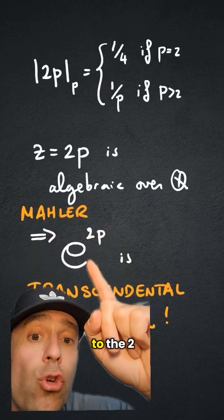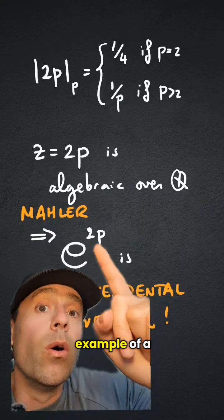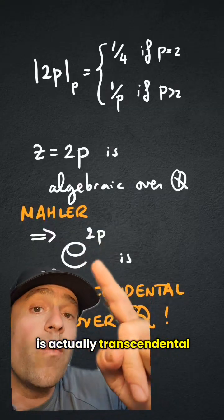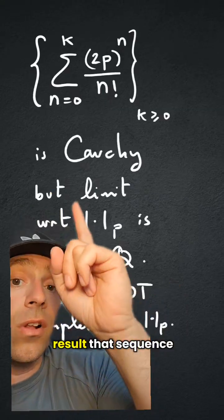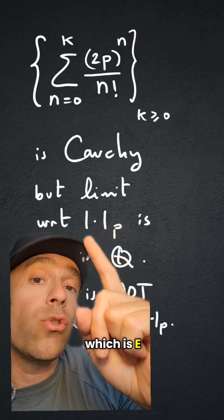Therefore, Mahler tells me that e to the 2p is transcendental over Q, so that's an example of a p-adic number that is actually transcendental over Q. So as a result, that sequence up there has a limit, which is e to the 2p.